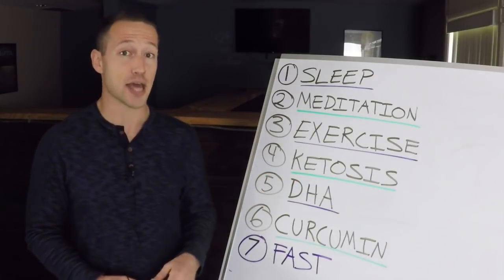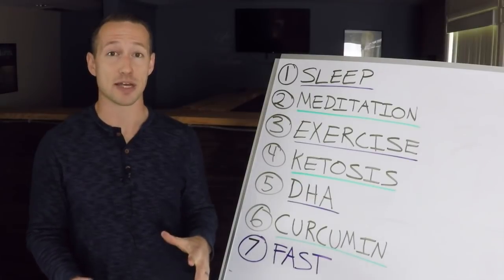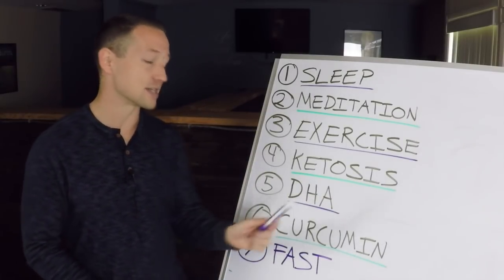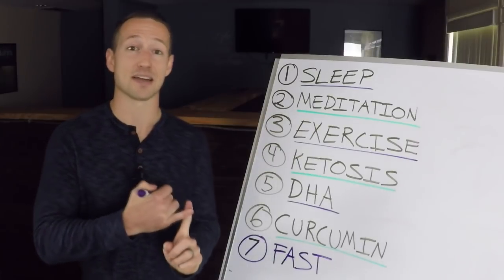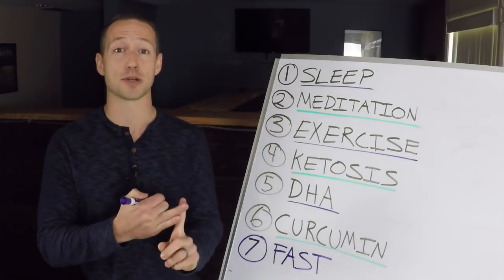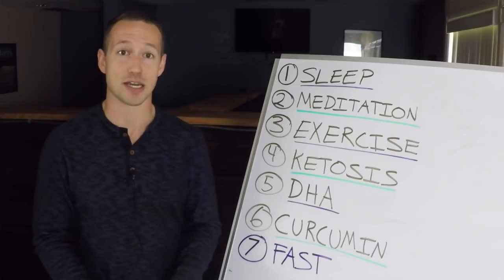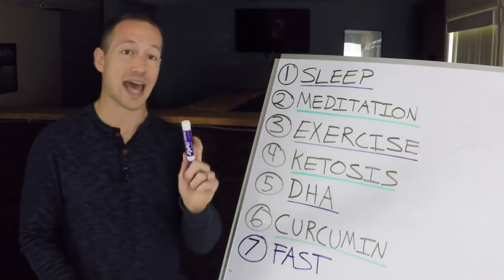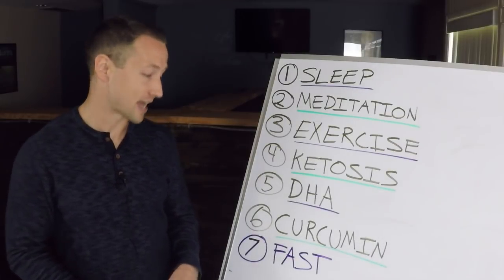Number five is going to be DHA. Now DHA is an omega-3 that's found in your fish oils. That's probably where you're familiar with it from. But there are plenty of studies that show that DHA is not only anti-inflammatory, it actually increases the production of BDNF, which is going to also help increase your rate of neuroplasticity. So don't forget to add DHA into your supplementation schedule.